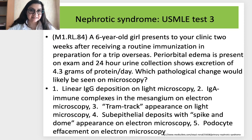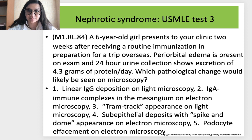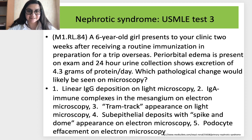USMLE Test 3 — nephrotic syndrome: A six-year-old girl presents two weeks after receiving a routine immunization. Periorbital edema is present and 24-hour urine collection shows 4.3 grams of protein per day. Which pathological change would likely be seen on microscopy? Options: (1) Linear IgG deposition on light microscopy; (2) IgA immune complexes in the mesangium on electron microscopy; (3) Tram-track appearance on light microscopy; (4) Sub-epithelial deposits with spike and dome appearance on electron microscopy; (5) Podocyte effacement on electron microscopy.